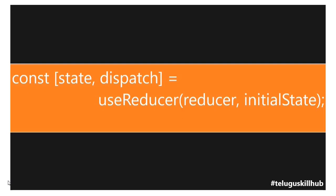This is the actual syntax of useReducer. In useReducer, we pass two different arguments: one is the reducer function, and the other is the initial state. The reducer will return the modified state value based on the user action that is dispatched.